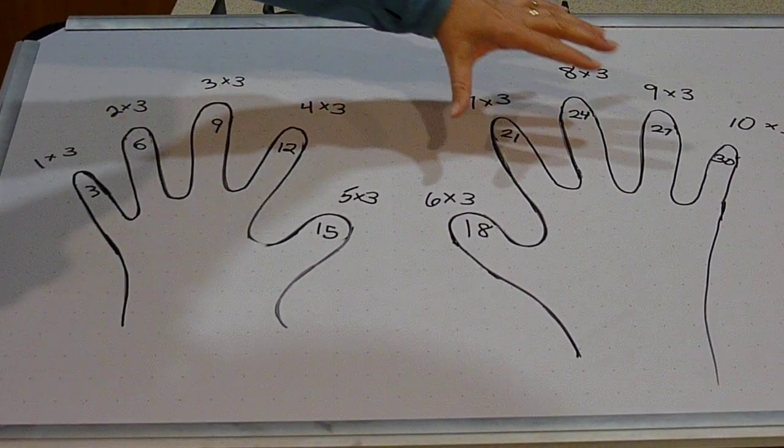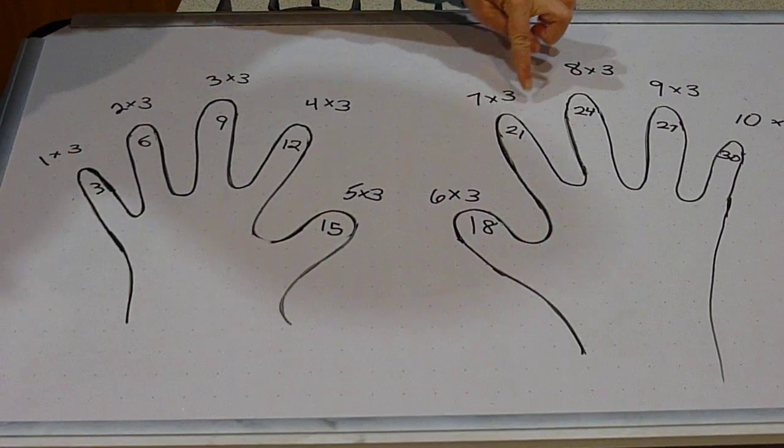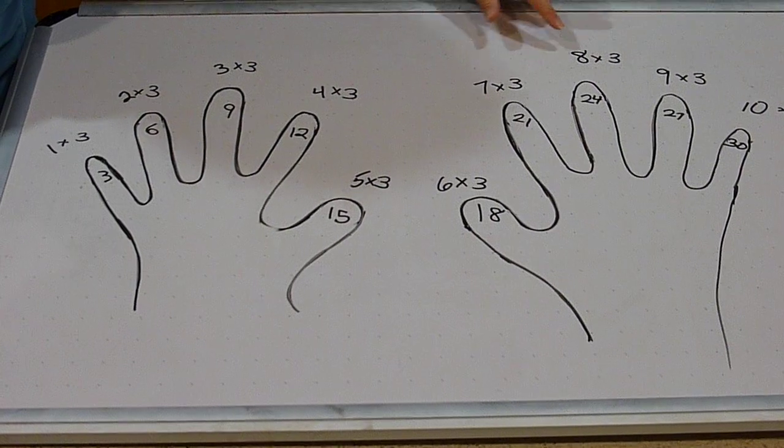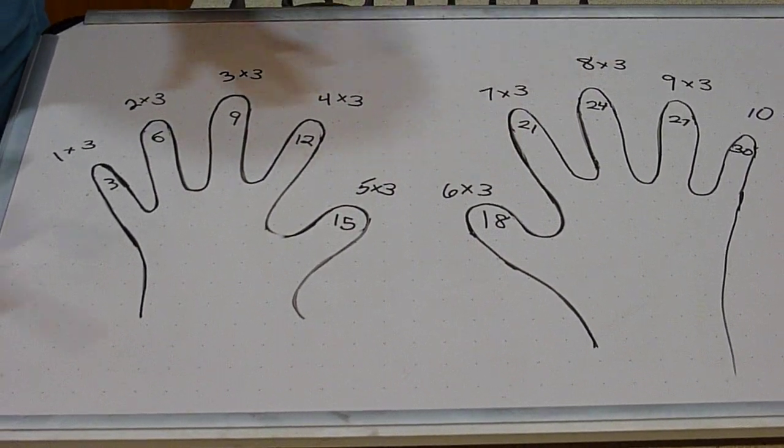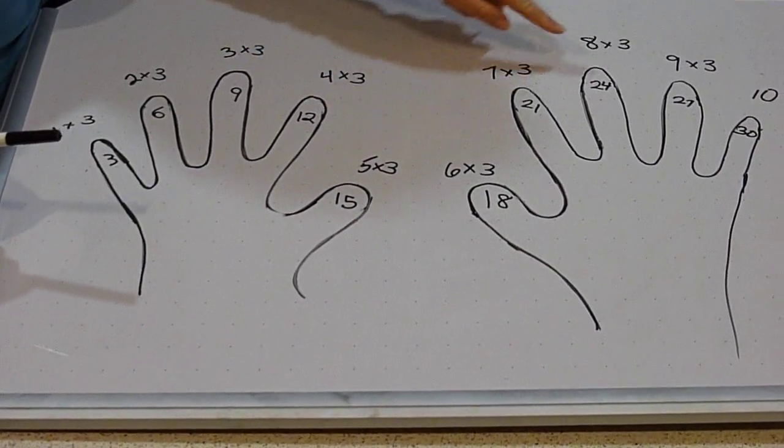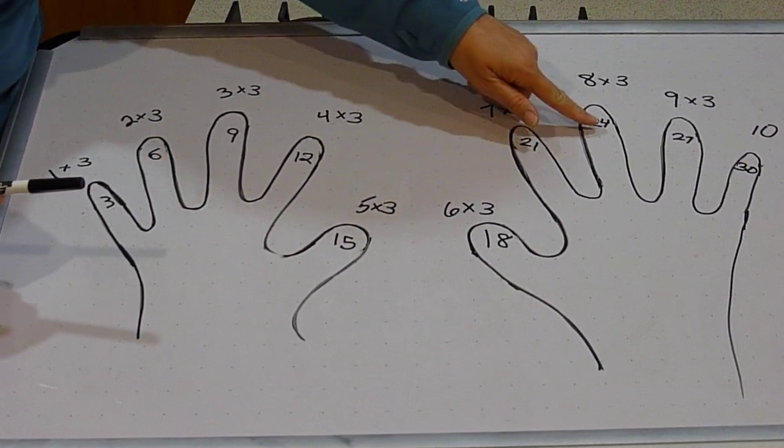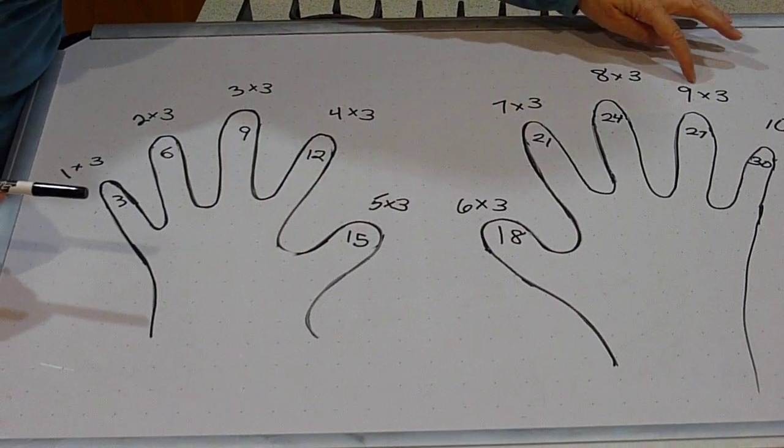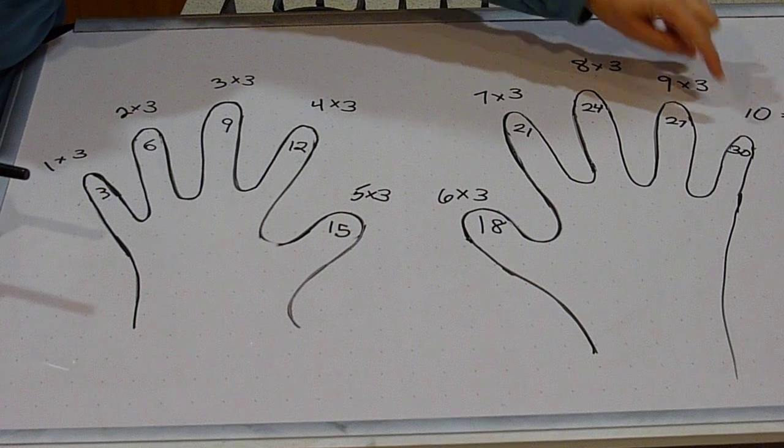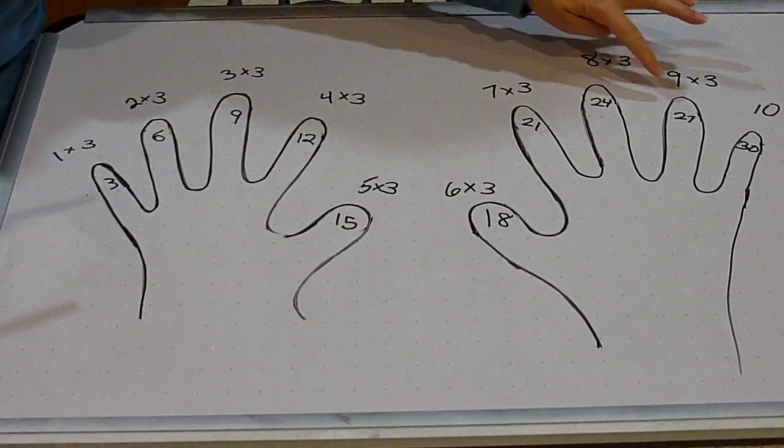Then we talk about these three fingers, which these three facts are the hard ones. Seven times three, eight times three, and nine times three. But I say, look, they're all in the twenties. Seven is going to be before eight, so twenty-one is before twenty-four. And then nine is the one right before ten times three, so it's the one right before thirty. Nine times three is twenty-seven.